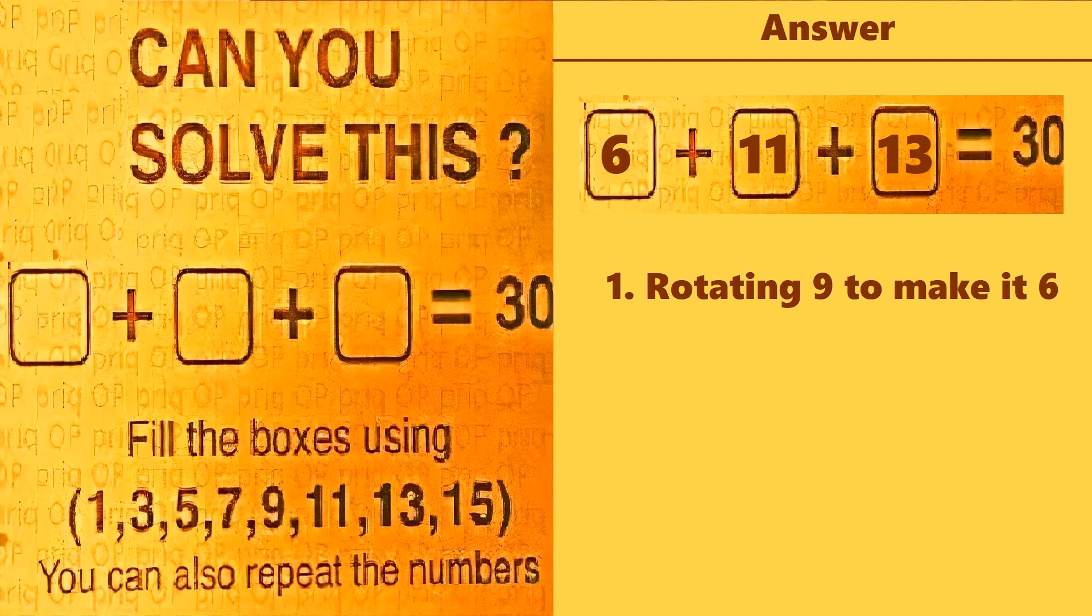Let's move on to the second solution by using math operators. We can use 11, then the minus symbol, then 9 in the first box, and then 15 and 13 in the second and third boxes respectively. This will give you 30.